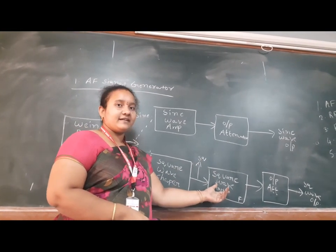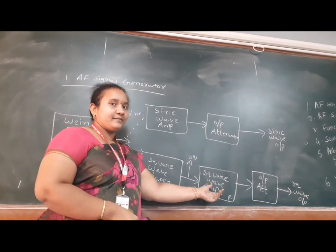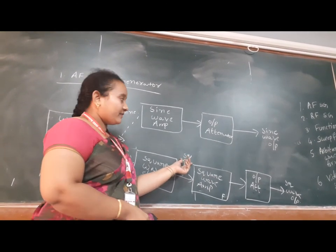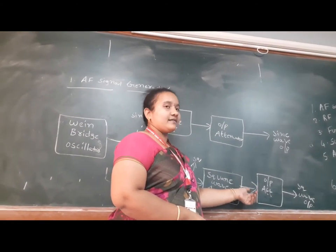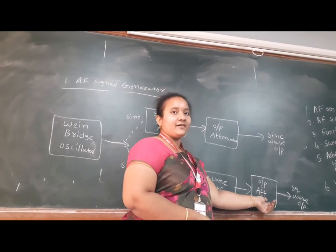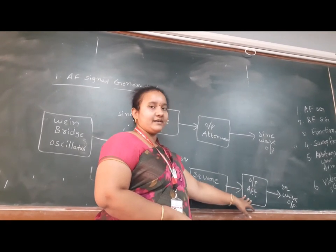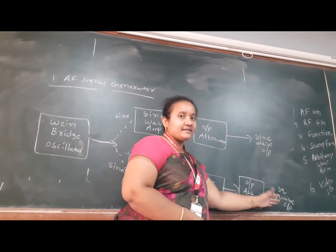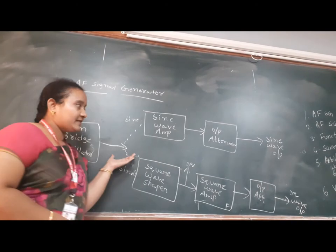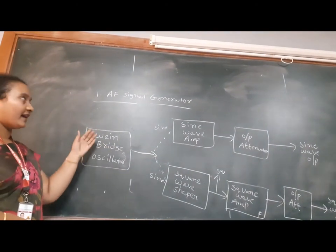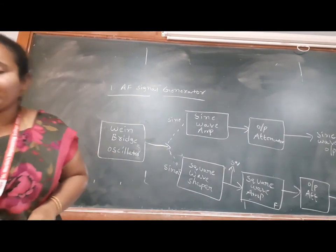If the switch is connected to the second path, the sinusoidal signal is applied as input to the square wave shaper. The square wave shaper is nothing but a Schmitt trigger circuit. The main purpose of the Schmitt trigger circuit is to convert sinusoidal signals to square signals. So finally we get a square signal as output.